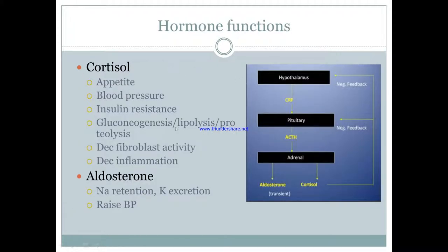So what do these hormones actually do? Cortisol does a bunch of things in the body — it is a steroid. It increases your appetite and blood pressure, causes insulin resistance, produces sugar through gluconeogenesis and breakdown of fats and proteins. You also get decreased fibroblast activity. If you think back to Cushing's disease, why do they have abdominal striae? Because they don't have fibroblast activity and you get stretching of your skin. And of course, decreased inflammation.